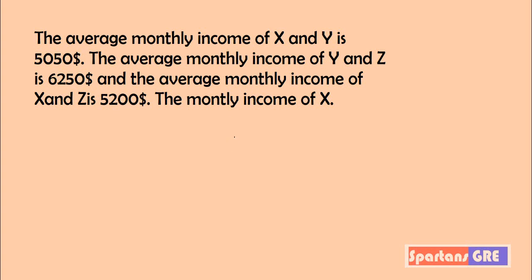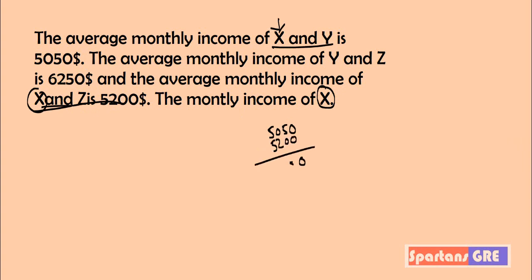How you can solve this directly — he is asking the value of X. So add whichever values you have containing the X variable. Here X and Y, you are having X, so add this value: 5050. And here also you are having X, so add this value: 5200. If you add these you are getting this much amount.